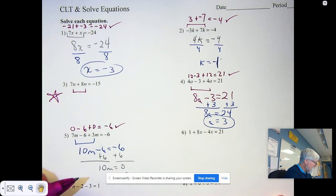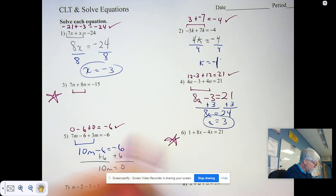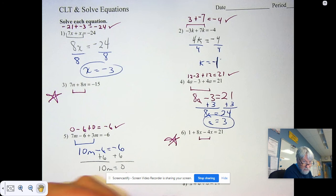You do number 6 with the EdPuzzle. You're going to combine 8x with minus 4x. And then you'll subtract 1 from both sides before you divide.